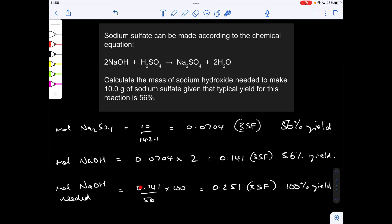So all I'm doing is dividing the moles by the 56, so by the yield, multiplying by 100. So that takes it up to 0.251 moles to three significant figures. And now all I need to do is multiply the moles by the MR of sodium hydroxide to turn it into grams, which to three significant figures is coming out at 10.1 grams.